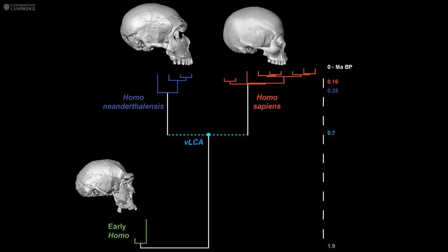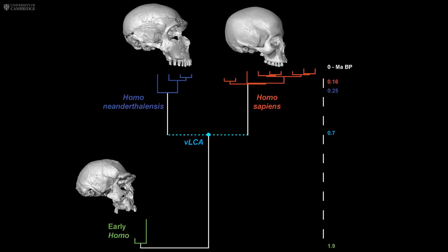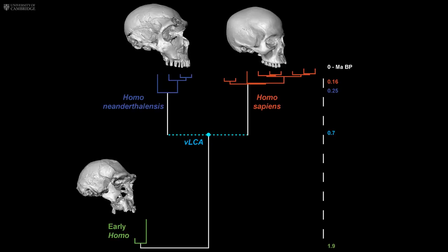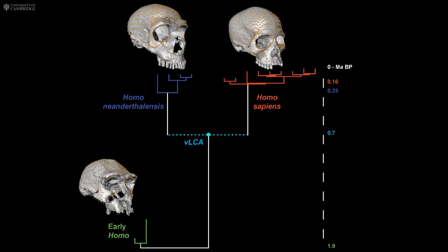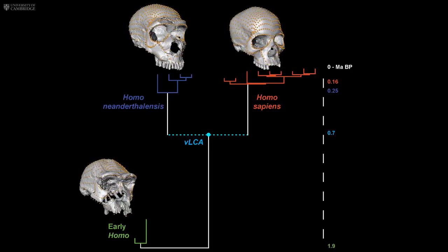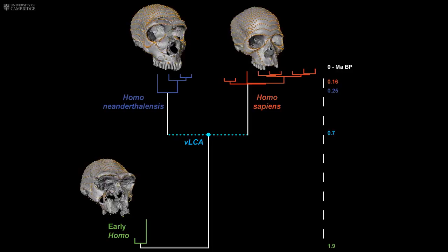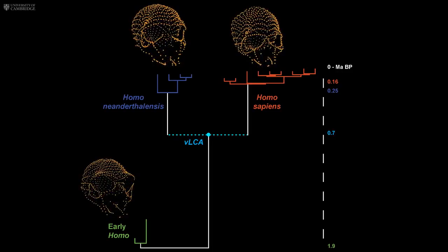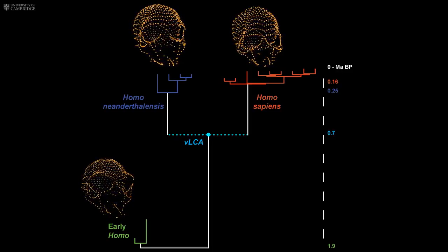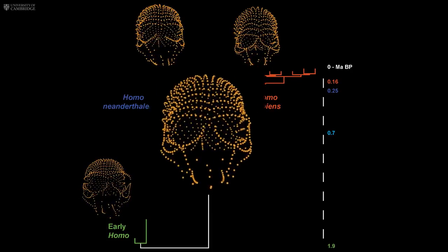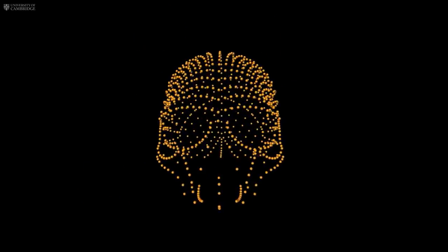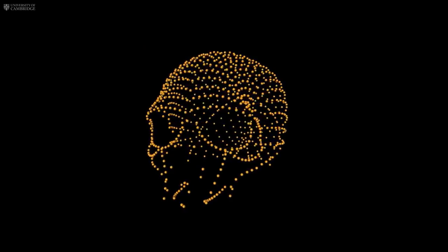We know we share a common ancestor with Neanderthals, but what did it look like? How do we know that the rare and fragmentary fossils we find are true representatives of our ancestral past? We used an innovative solution to deal with the imperfections of the fossil record: 3D digital methods combined with statistical estimation techniques to predict mathematically and then create virtual fossils.